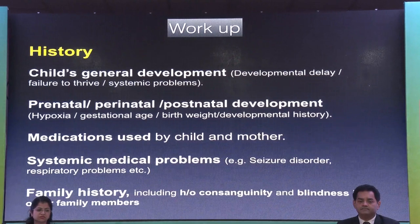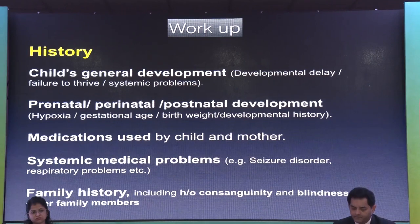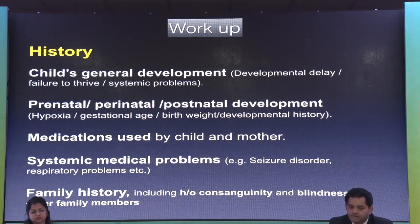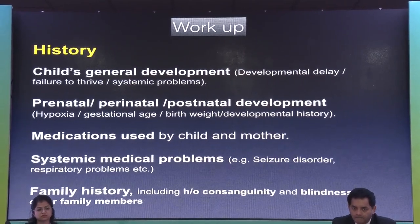Like anything else, we have to start with the history. Asking the child's parents gives a lot of inputs that help arrive at the diagnosis. Consider the child's general development, prenatal and perinatal history — evidence of hypoxia or prematurity points to different differentials. Were there any medications taken by the child or mother, such as anti-seizure medications, which can contribute to cerebral visual impairment? Any systemic problems like respiratory distress, as seen in Joubert syndrome, should also be noted.